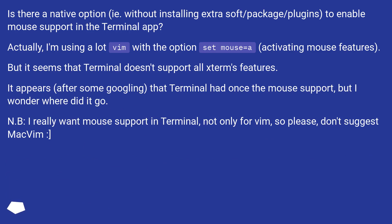Actually, I'm using Vim a lot with the option set mouse=a, activating mouse features. But it seems that Terminal doesn't support all xterm features. It appears, after some googling, that Terminal had once had mouse support, but I wonder where did it go?